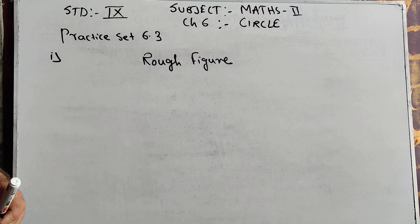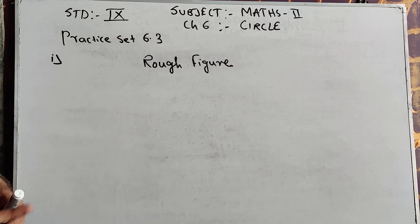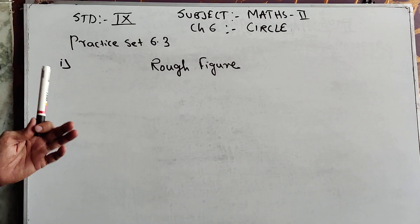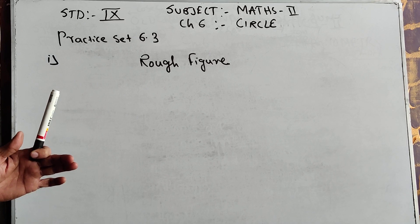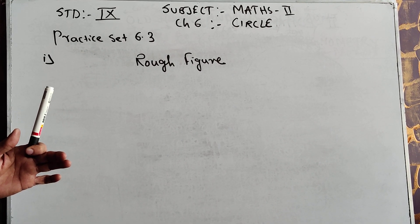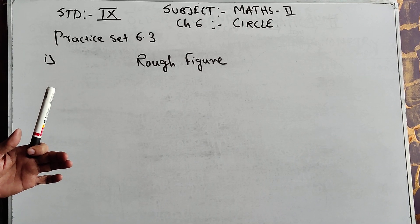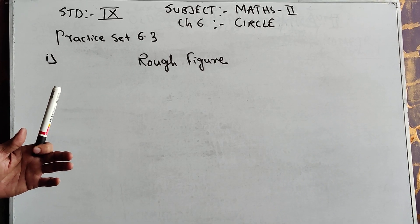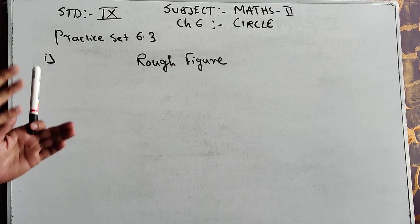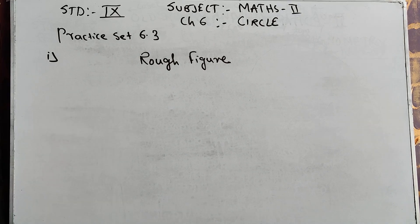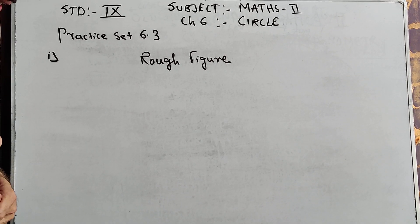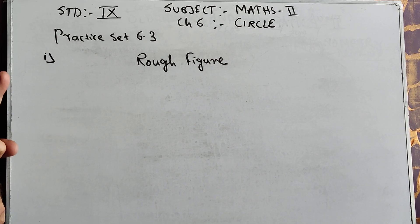Now come to Practice Set 6.3. In 6.3 we are doing constructions: construction of the in-circle and construction of the circum-circle. In-circle means a circle which touches all three sides from the inner side of a triangle. Circum-circle means a circle which touches all three vertices of a triangle. There are two sums of in-circle and three sums of circum-circle.